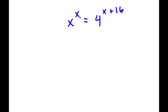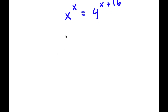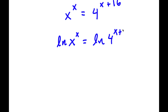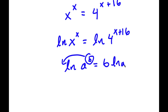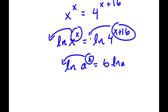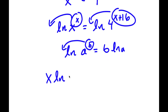In this problem, I have x to the power of x is equal to 4 to the power of x plus 16. The first thing I'm going to do is take the ln or natural log on both sides. So I have ln of x to the power of x is equal to ln of 4 to the power of x plus 16. If I take the ln of something in the form a to the power of b, I can move the exponent b to the front to get b times ln a. So I can move x to the front on the left, and x plus 16 to the front on the right, giving x times ln x is equal to x plus 16 times ln 4.